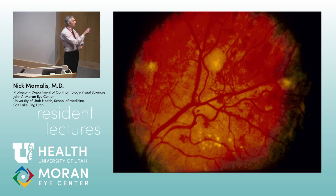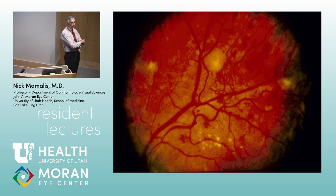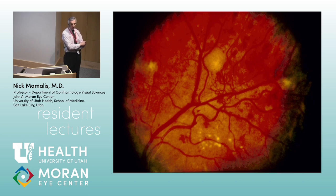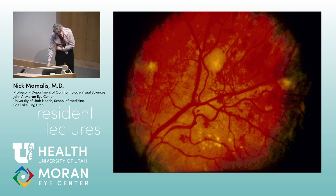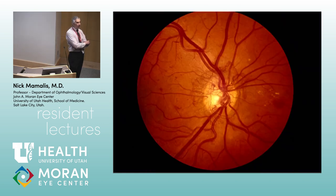Here we see diffuse hemorrhage, exudates inferiorly, and a lot of dilated tortuous vessels — some neovascularization forming. This is proliferative diabetic retinopathy. We subdivide the neovascularization into NVD (neovascularization of the disc) and NVE (neovascularization elsewhere).